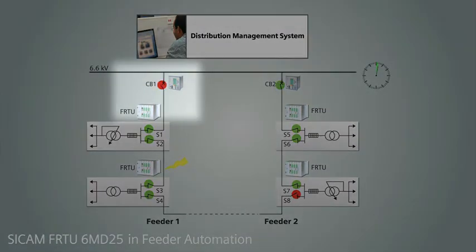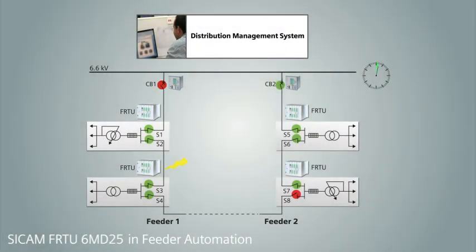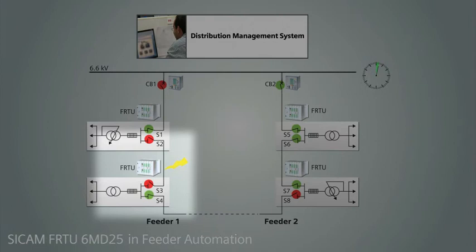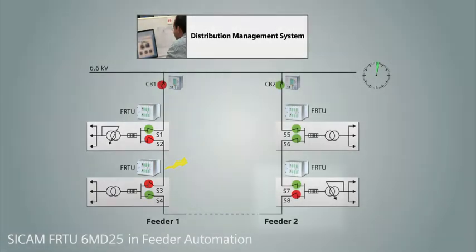The feeder gets disconnected. Switches S2 and S3 are opened and switch S8 is closed by respective FRTUs. Once the fault is isolated, feeder 1 is closed with quickest restoration of service with merely no effect on consumers.